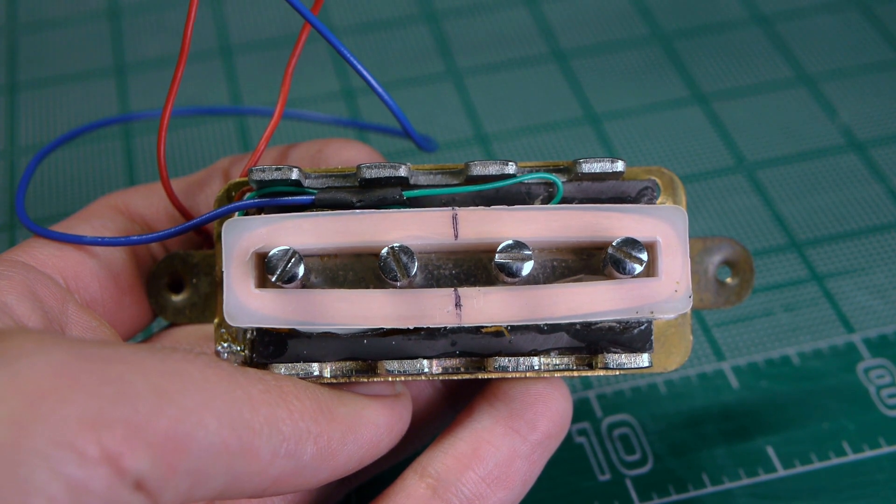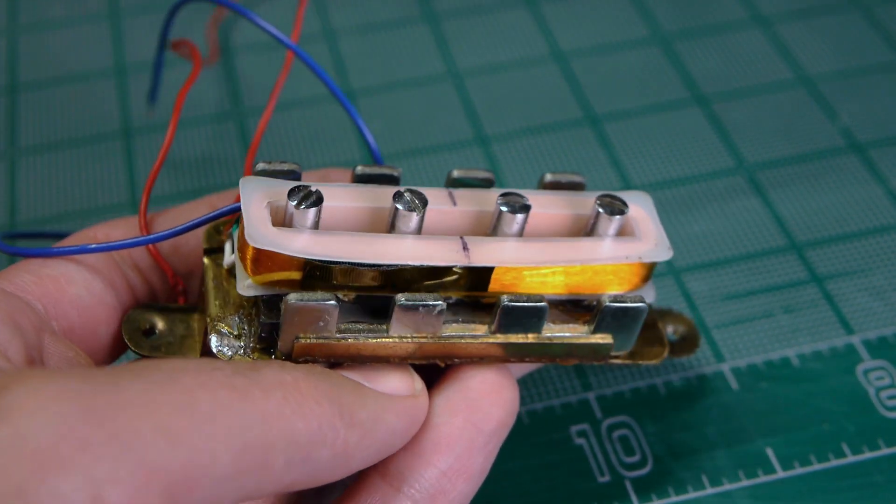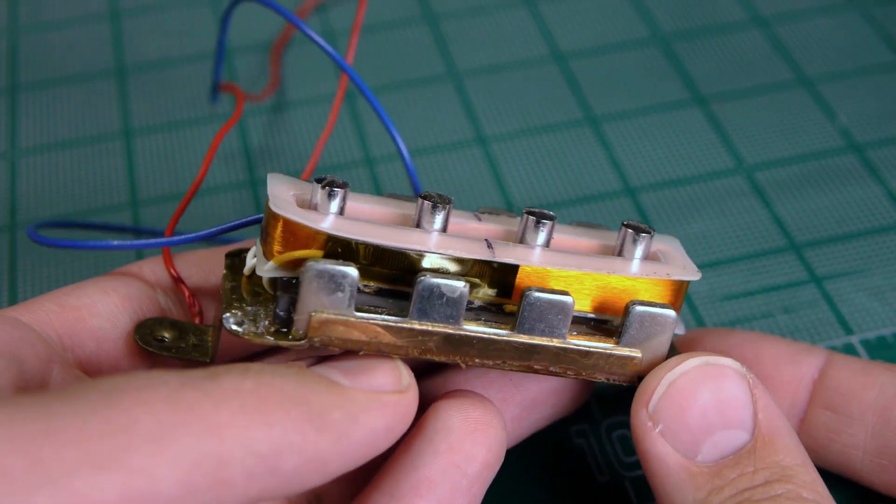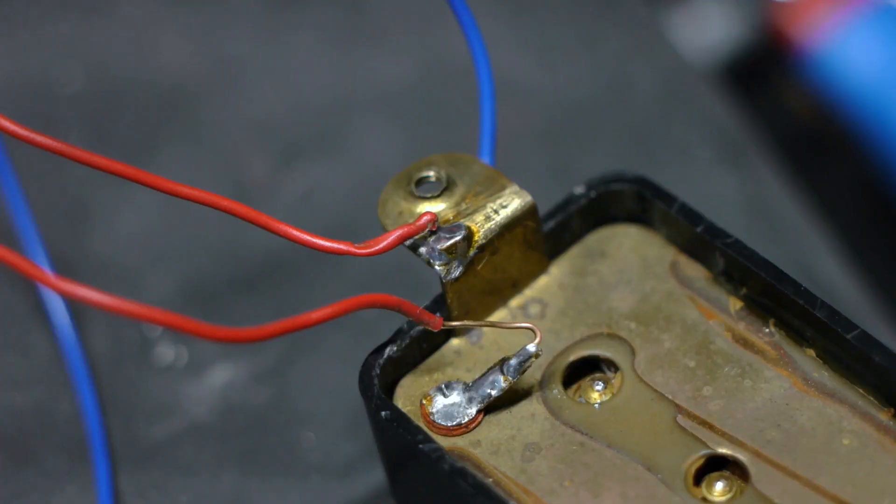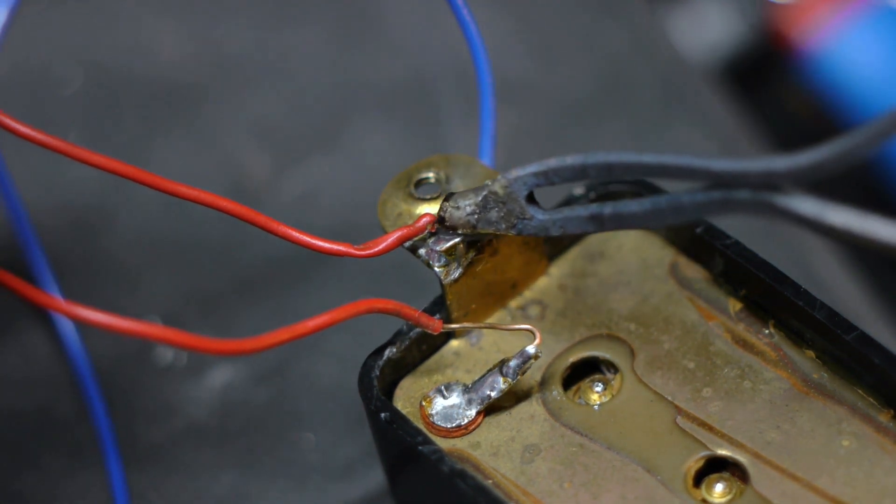soldering the 22 gauge hookup wire leads to the pigtails. However, I'm going to take it one step further, and not only color code the start and finish leads, but add a third, separate ground wire for the base plate. Instead of the original two red wires for the start and finish leads, I'm going to wire it with red and blue for the start and finish leads, and black for the base plate ground. And that's for one major reason, to allow the pickup's phase to be switched.